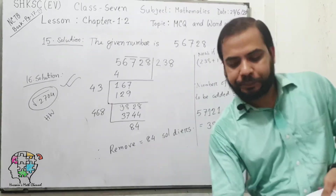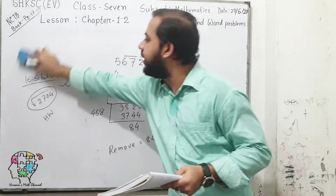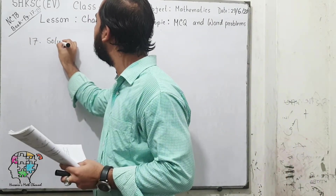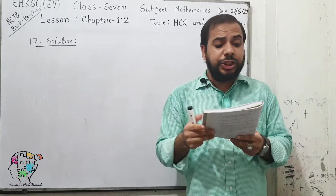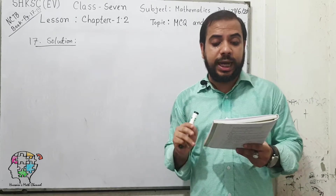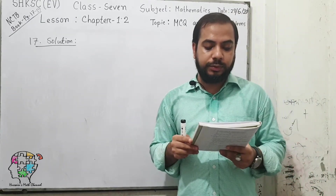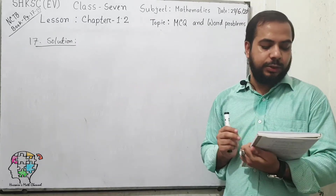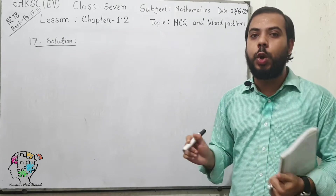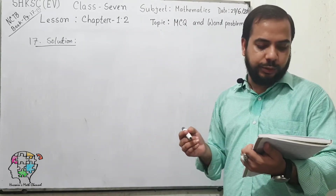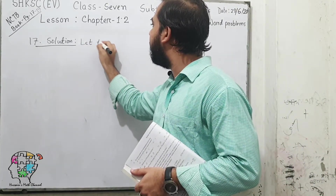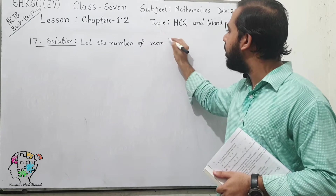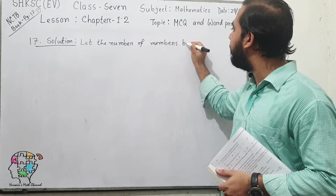Now we move on to question number 17. Question number 17 asks: each member of a cooperative society subscribes 20 times the number of members in Takas. The total amount raised being Takas 20,480 — find the number of members of the society. We need to find the number of members. So first, we let the number of members be X.